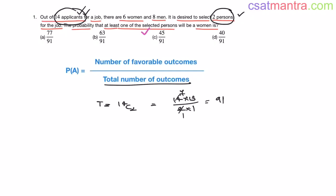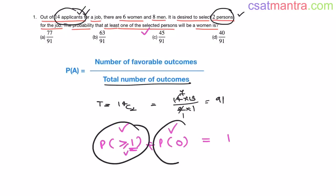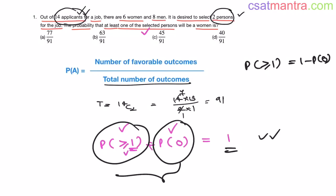The event we want is: probability of at least one of the selected persons being a woman. At least one means one or greater than one. Probability of at least one woman plus probability of no women equals 1 — because the sum of probabilities of an event happening and not happening always equals 1. So, probability of at least one woman = 1 minus probability of no women.